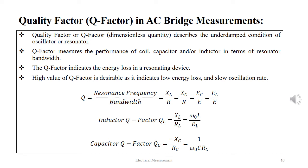The Q factor is numerically represented as Q = resonance frequency / bandwidth, which translates to XL/R or XC/R or EC/E or EL/E. The Q factor of inductor QL = XL/RL, which translates to ω₀L/RL, and the Q factor of capacitor QC = -XC/RC, which translates to 1/(ω₀CRC), where ω is the natural frequency of the inductor and capacitance elements.